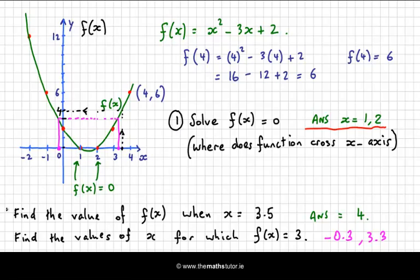There's 1, there's 2, and there's 3. The first one, solve f(x) = 0, is find where the function crosses the x-axis.